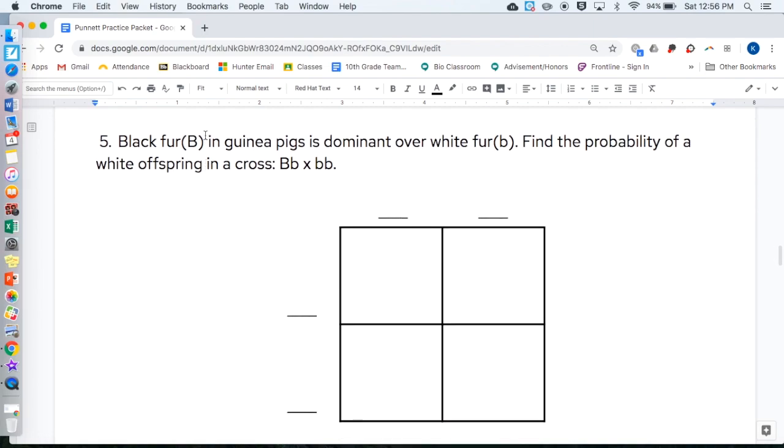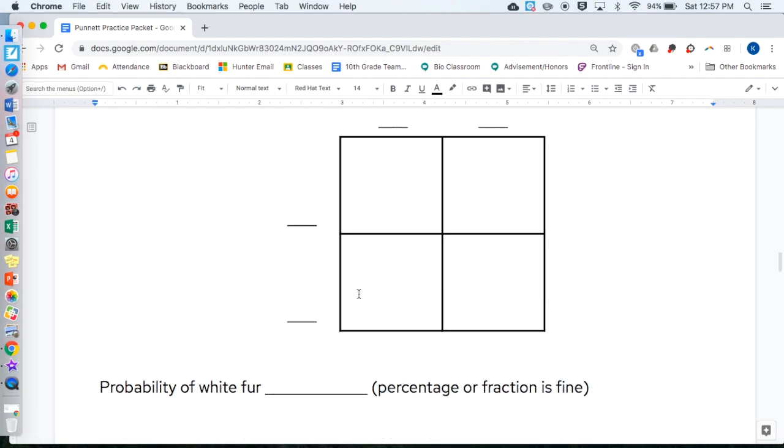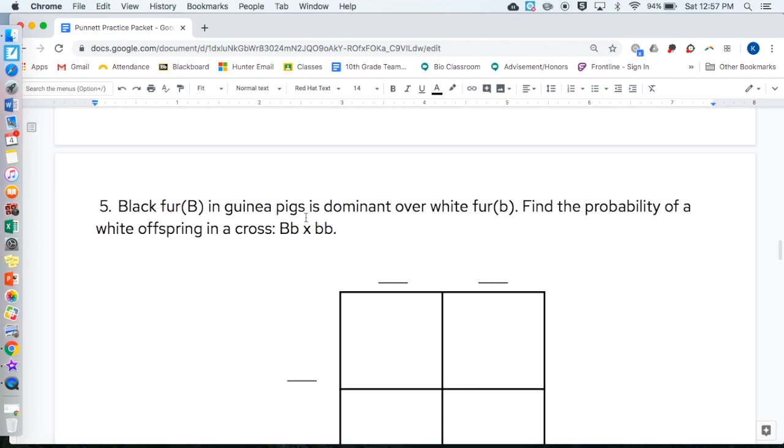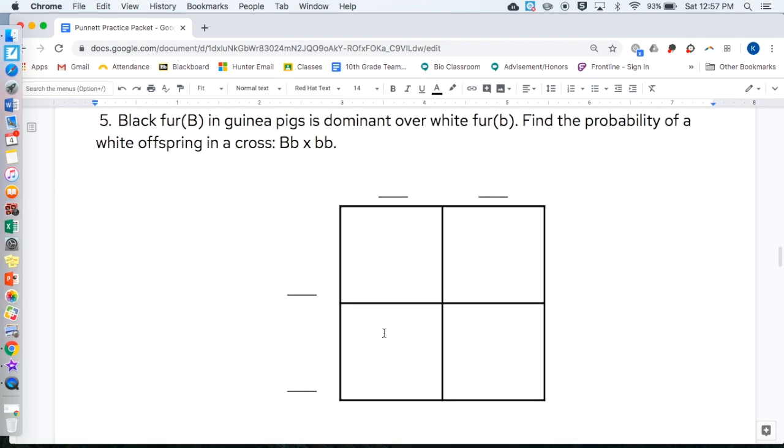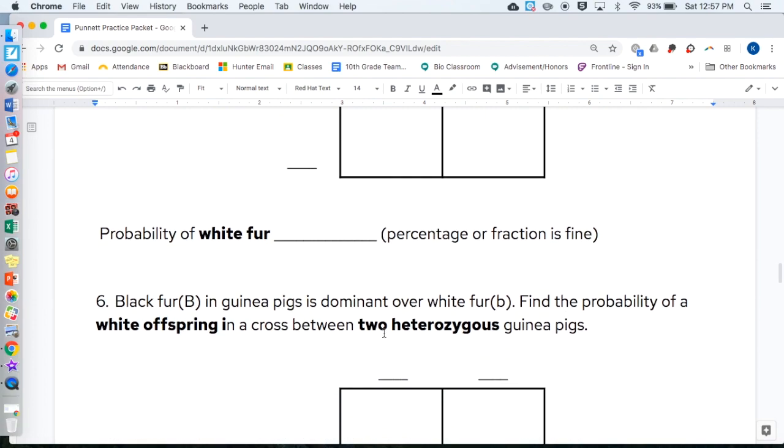Black fur, capital B in guinea pigs, is dominant over white fur, lowercase b. Find the probability of a white offspring in a cross, capital B, lowercase b, times lowercase b, lowercase b. Go ahead and do that here. And then figure out the probability of white fur, percentage or fraction is fine. Use this sentence if you're not sure which color fur goes with which genetics.